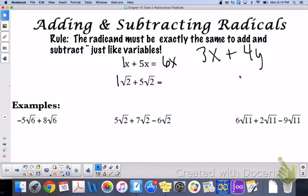So the same thing with radicals. When we have something like one root two plus five root two, now we have six root twos. You just simplify what's on the outside, the inside stays the same when you are adding and subtracting, just like with variables.